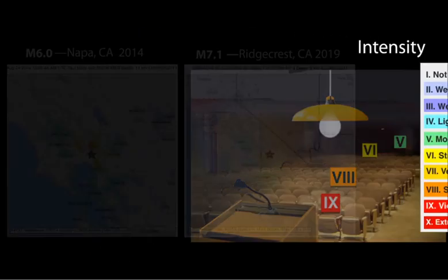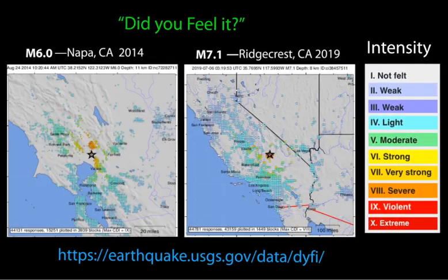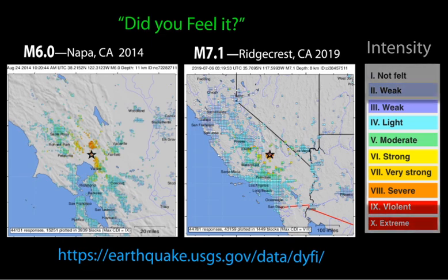So, a given earthquake has only one magnitude, but will produce different intensities of ground shaking as shown on the USGS Did You Feel It intensity maps.